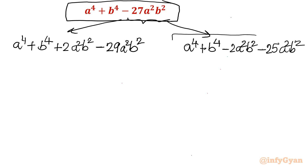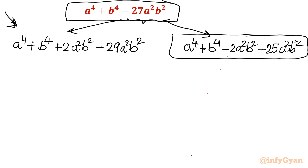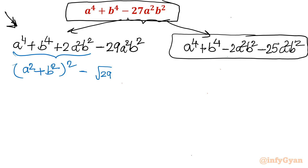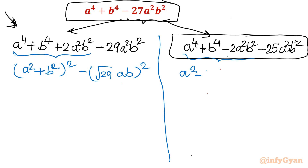Generally we use the first method, but the second approach is also possible. Let's find the factorization. From the first three terms of approach one I write (a² + b²)² minus (√29 · ab)². We use the difference of two squares. For the second equation, from the first three terms I write (a² - b²)² minus (5ab)². Again the difference of two squares.